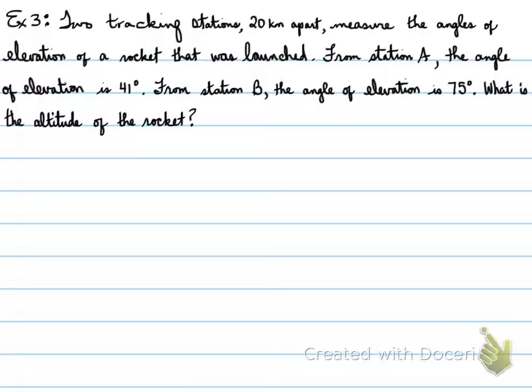The next one is two tracking stations 20 kilometers apart. Measure the angles of elevation of a rocket that was launched. From station A, the angle of elevation is 41 degrees. From station B, the angle of elevation is 75 degrees. What is the altitude of the rocket?